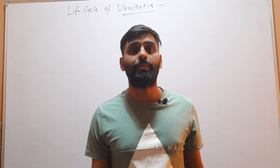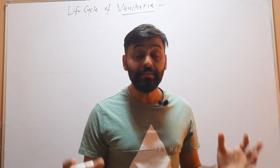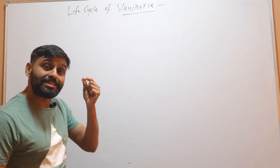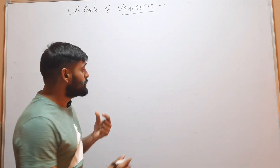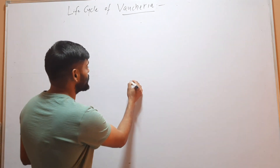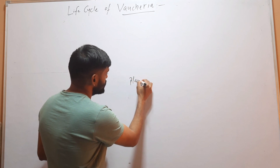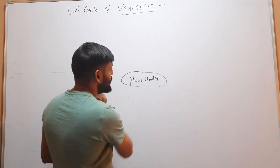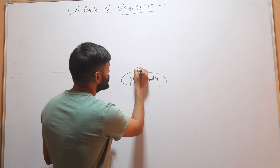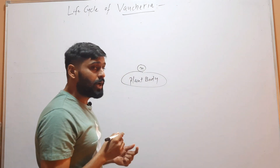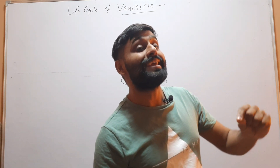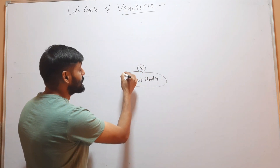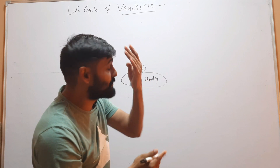Hello friends, welcome to my YouTube channel. In this video we will discuss the life cycle of Vaucheria. We will start its life cycle from the plant body. This plant body of Vaucheria is haploid. Now we will discuss asexual reproduction in Vaucheria, which occurs through three different types.